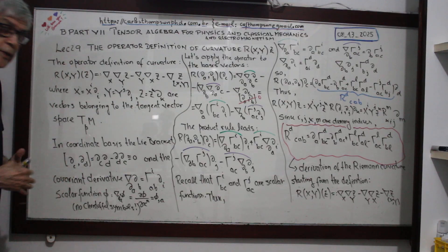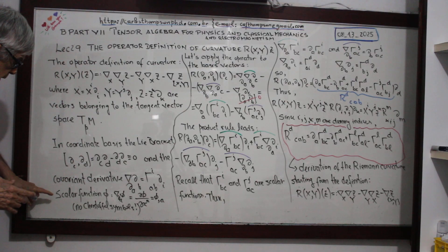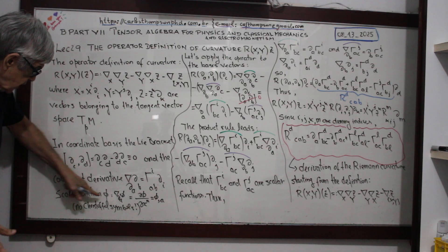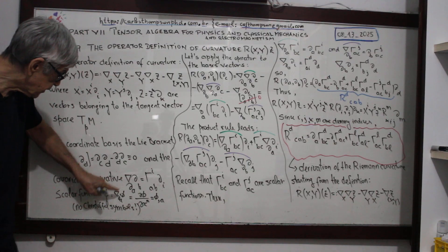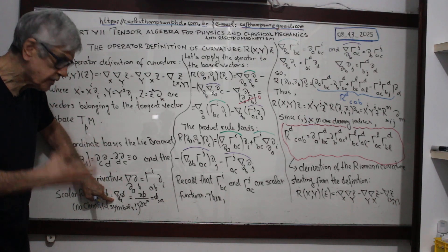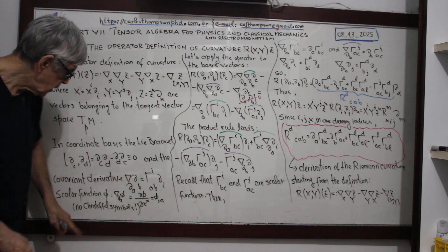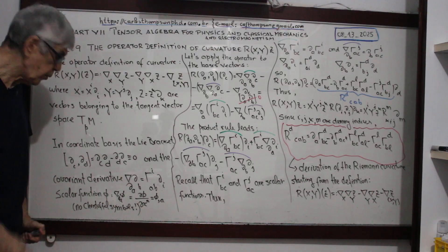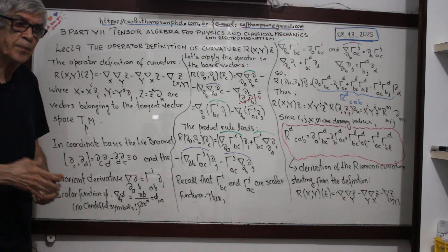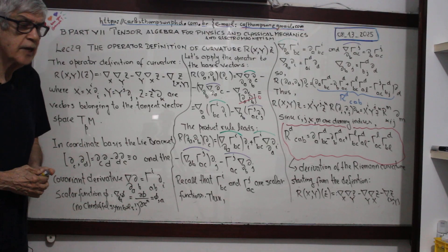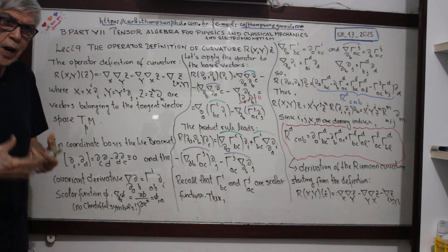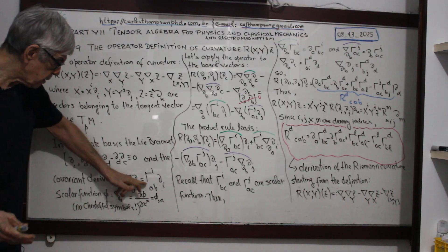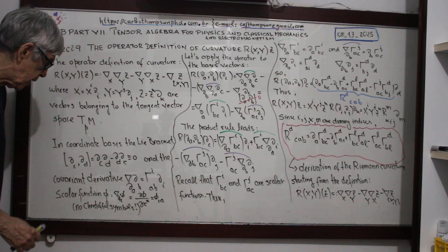Another important concept: when you deal with a scalar function, the covariant derivative of a scalar function is just the partial derivative. There is no Christoffel symbol when you apply the covariant derivative, because the scalar has no direction. That's why the covariant derivative can be represented as a partial derivative with respect to x^a.